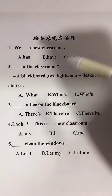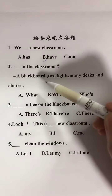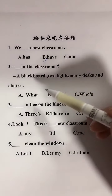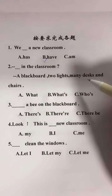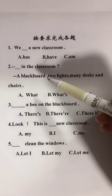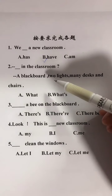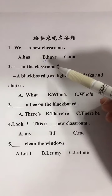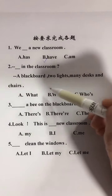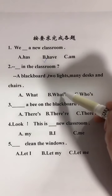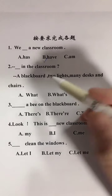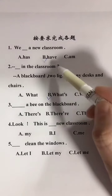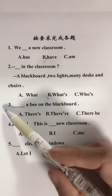第二题：Some __ in the classroom。提示语：A blackboard, two lights, many desks and chairs，意思是一个黑板，两盏灯，许多椅子和桌子。从提示语可知，问句应询问教室里面是什么，所以用what，答案：What's in the classroom？意思是教室里面有什么。